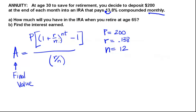We're going to take that quantity of 1 plus rate divided by n and raise it to n times t. In our case, t is going to be 65 minus 30 because we're going to retire at age 65 and we're starting this IRA at age 30, so it's a total of 35 years.